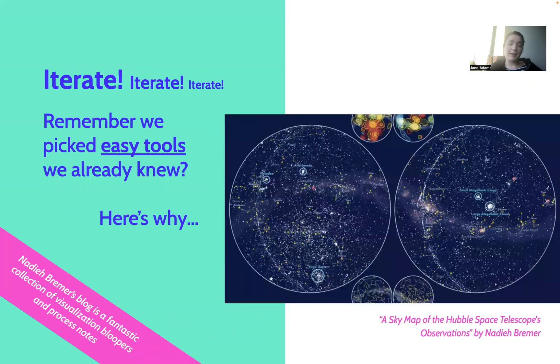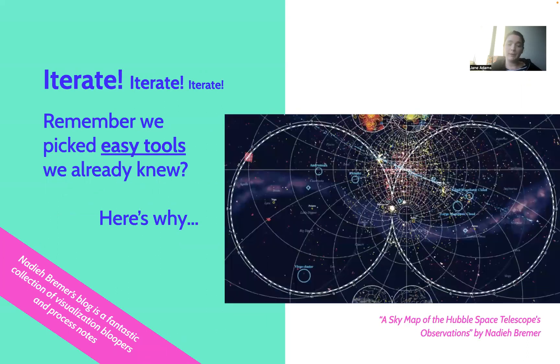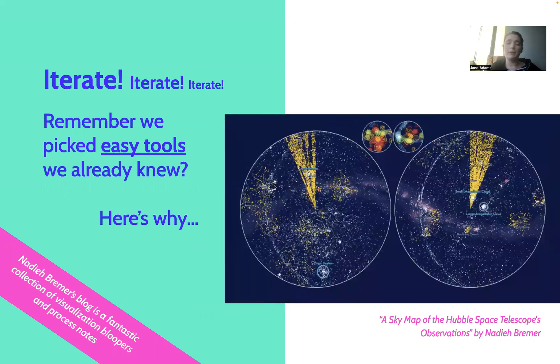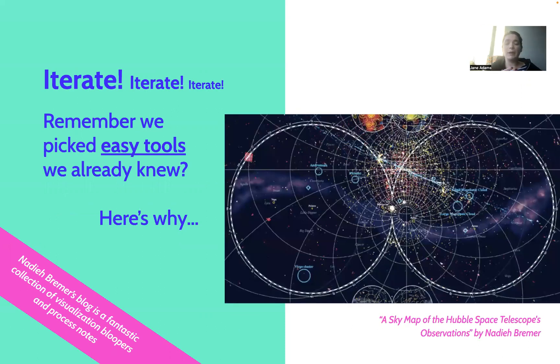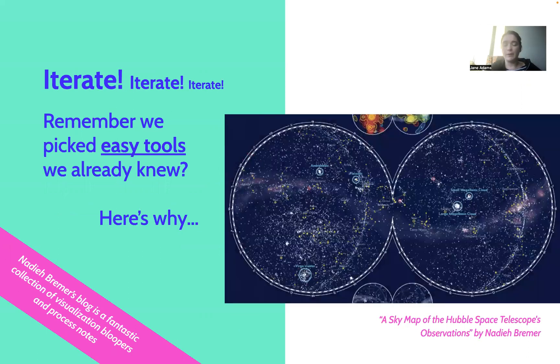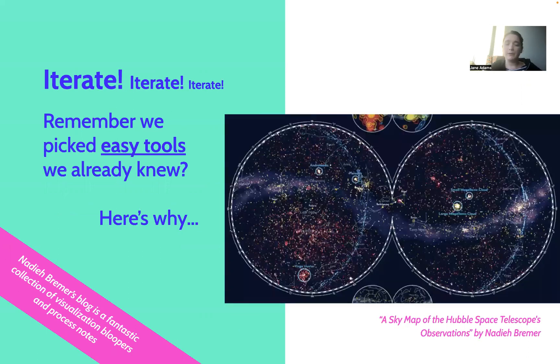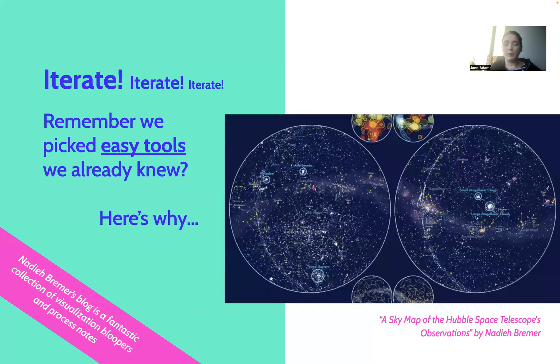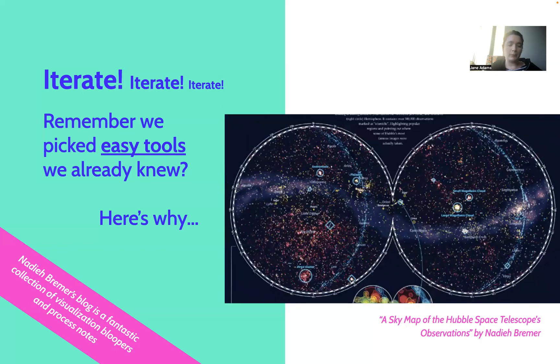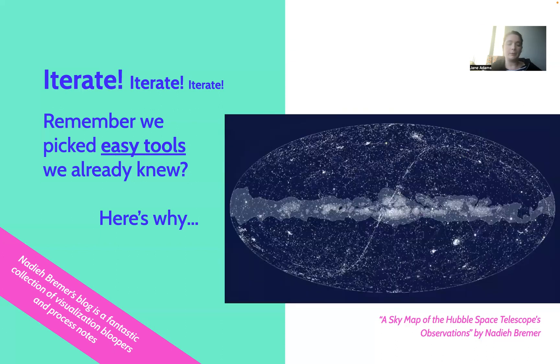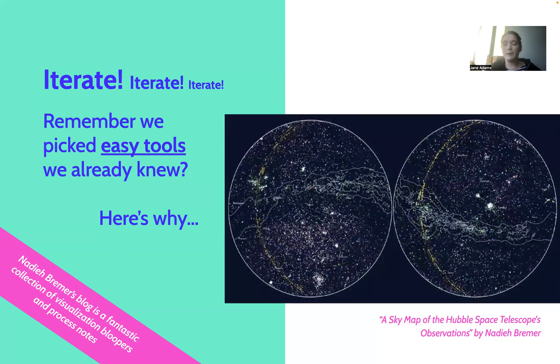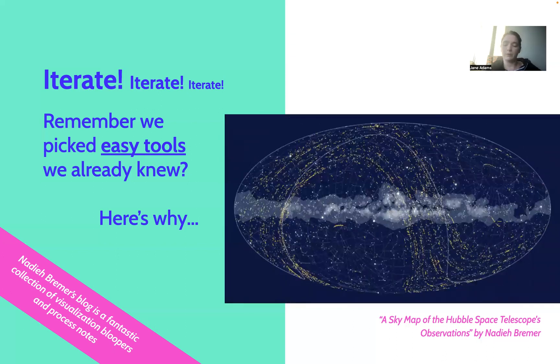And then iterate, iterate, and iterate. So remember in that earlier step how we picked easy tools that we already knew? This is the reason why. So if you're working with something that's really complicated, you have this high barrier to entry. And you get kind of precious about your charts. And you don't want to make a whole bunch of charts because it takes a lot of time investment to do each one. So if we start simple with tools that are familiar to us, it gives us a lot more ability to make a lot of charts in a short amount of time. This is a great gif that I love from Nadia Bremer's blog, which shows her visualization bloopers and process notes for the creation of one particular chart that she made. And you can see that she went through a lot in the process before finally settling on a final visualization.